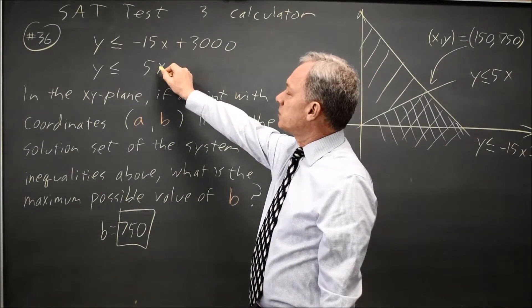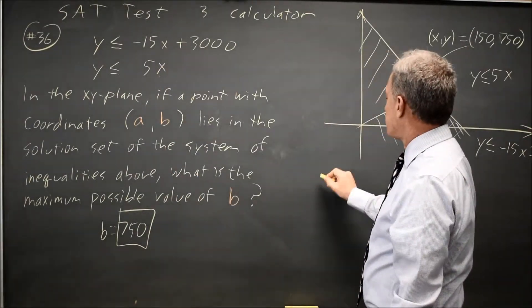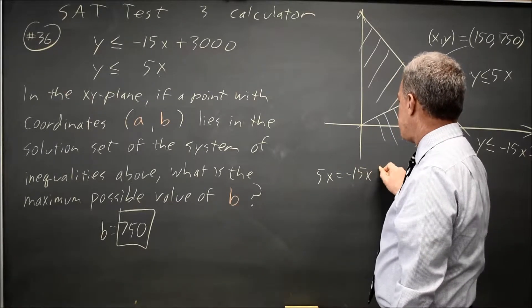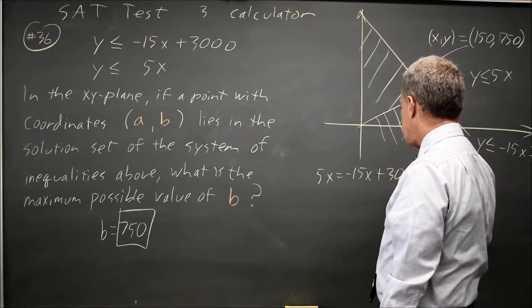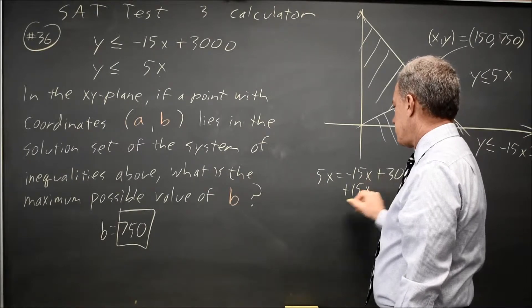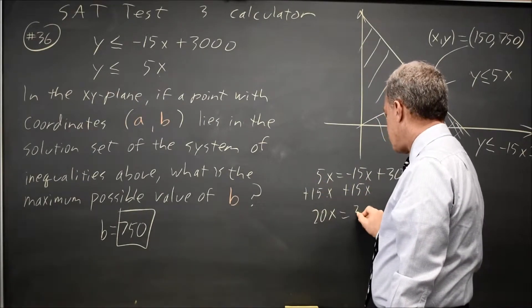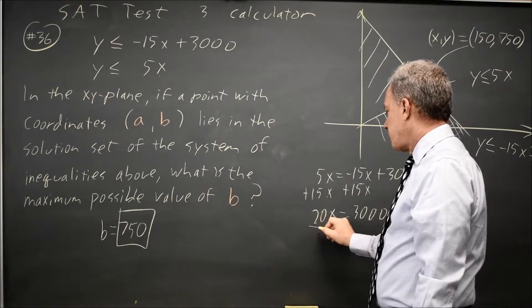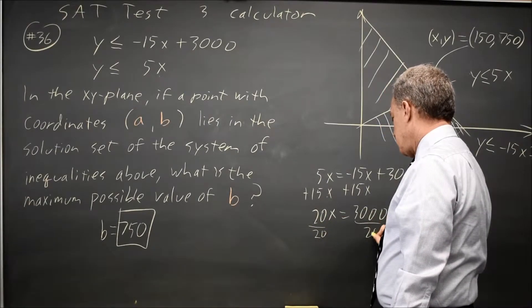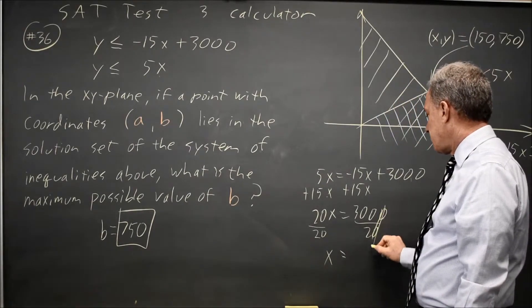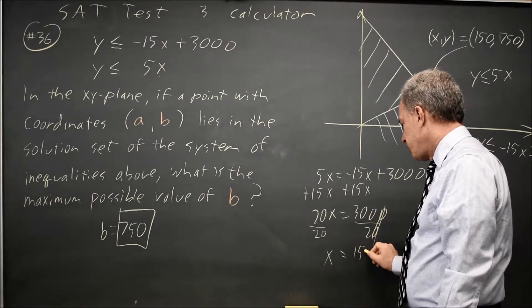At the point of intersection, the two y-values are going to be equal. So 5x equals negative 15x plus 3,000. Add 15x to both sides, and you get 20x equals 3,000. Divide by 20. If x equals 3,000 over 20, that's the same as 300 over 2, which is 150.